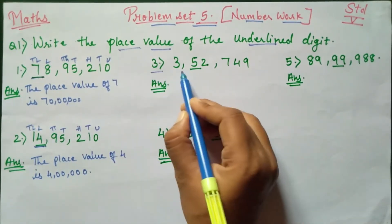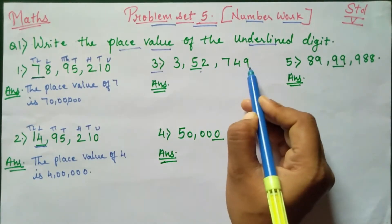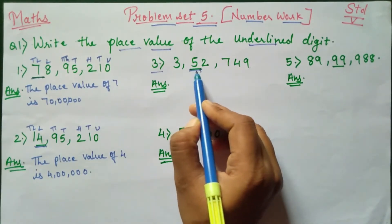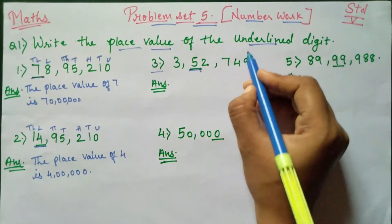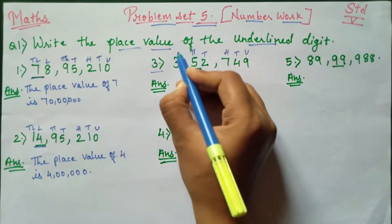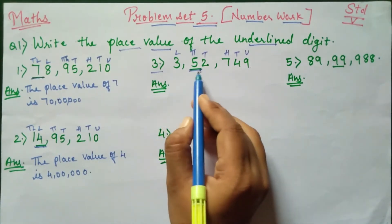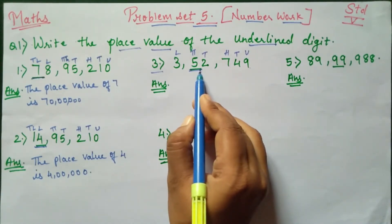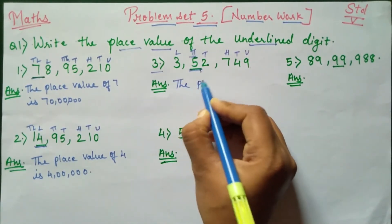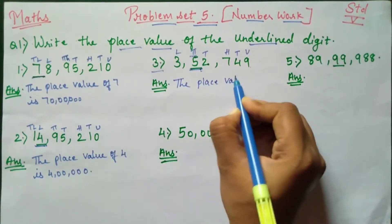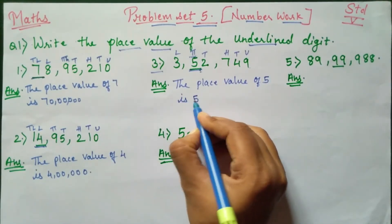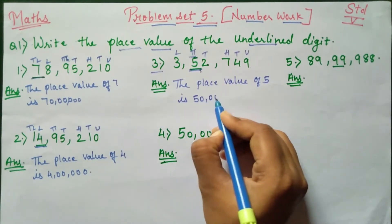Number 3: 3,52,749. Here they have underlined number 5. So to find out the place value, write first all the place values — tens, hundreds, thousands, ten thousands, and lakhs above the numbers. And then we will get the underlined digit answer is 50,000. Therefore, the place value of 5 is 50,000.